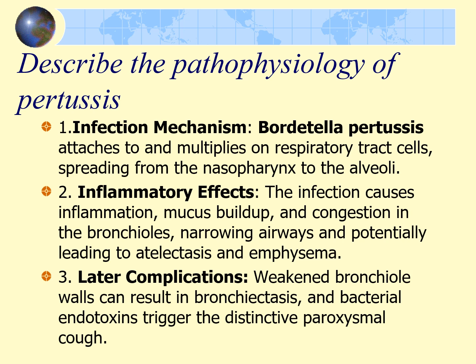After inhaling infected droplets, the bacteria attach to the ciliated epithelial cells of the respiratory tract and begin to multiply along the lining. This multiplication spreads from the nasopharynx to the alveoli, with the most severe effects occurring in the bronchial cells. This process leads to inflammation of the mucosal lining, resulting in excessive mucus production, congestion, and infiltration of lymphocytes into the mucosa.